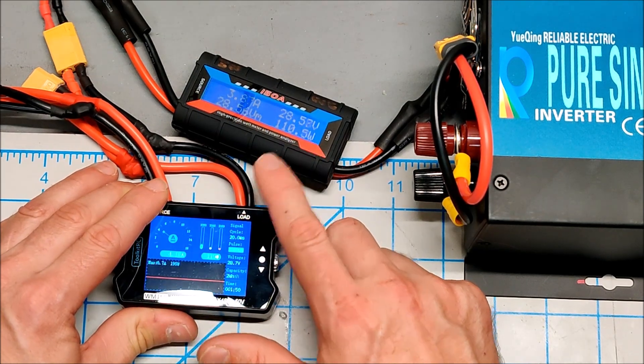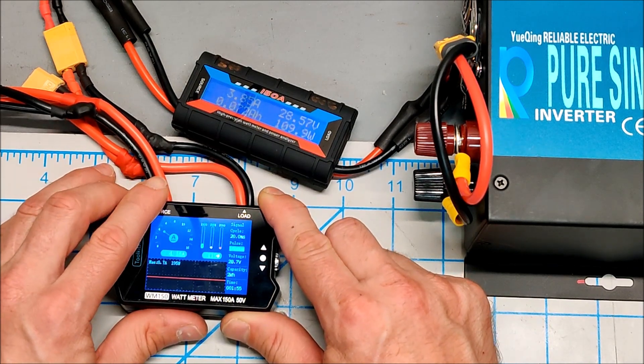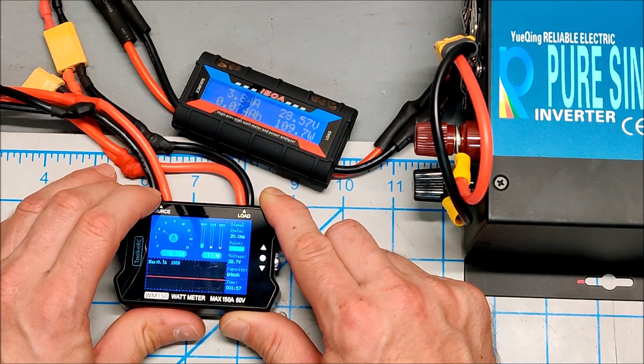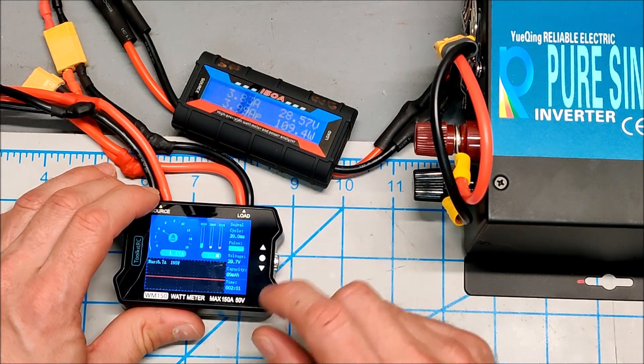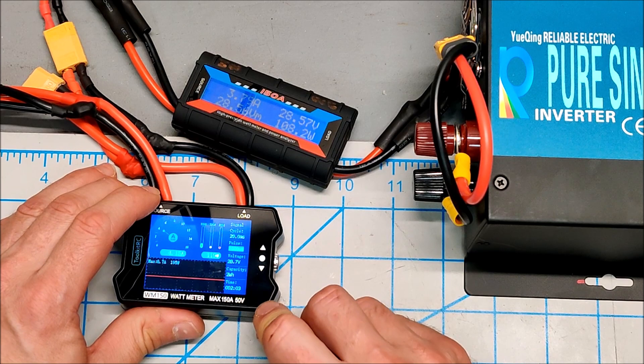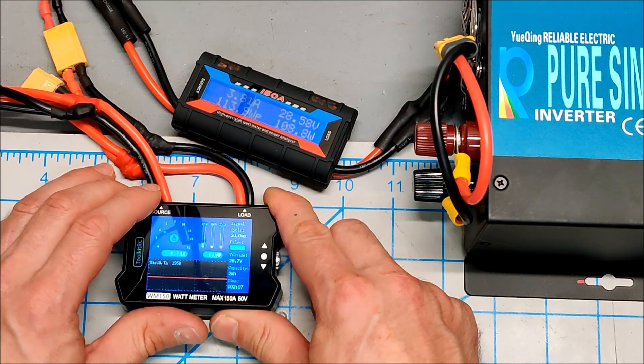It's saying we're pulling 120 watts. This says 110 watts. And this is saying 3.8 amps, and this is saying 4.1 amps. I can tell you that my power wall meter says 4.08 amps, and this is 4.1 amps, so this is accurate and syncs up with my power wall meter.